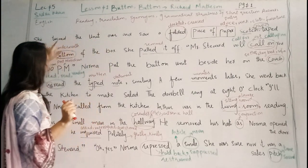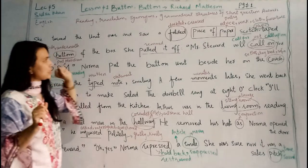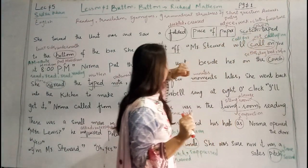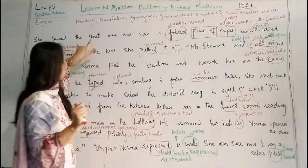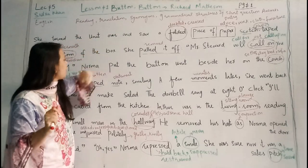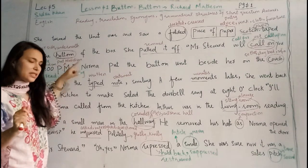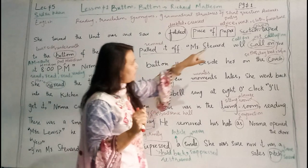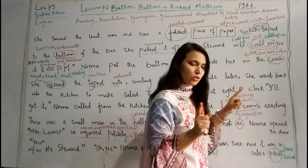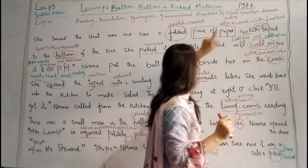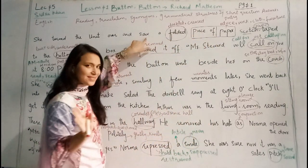Usne alay ko ulta diya, aur dibbe ki nichli taraf — dibbe ki nichli taraf — shifag terse lage hue, tairshuda kagaz ke ek tukde ko dekha. Usne alay ko ulta kar diya aur dibbe ki nichli taraf ya dibbe ki nichli jane. Is it clear?